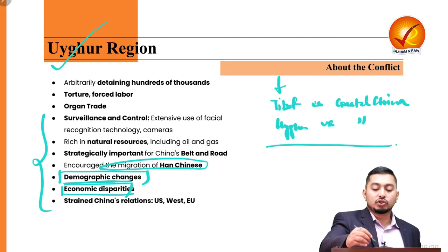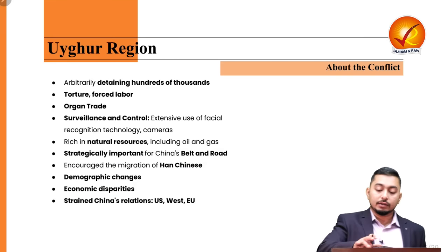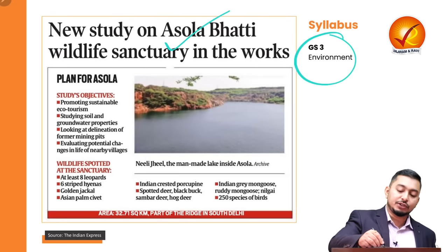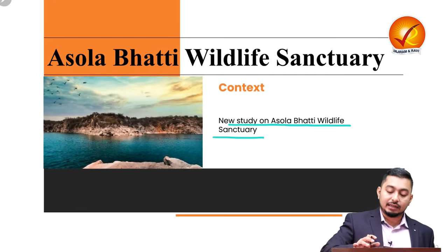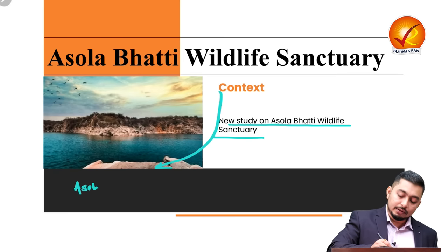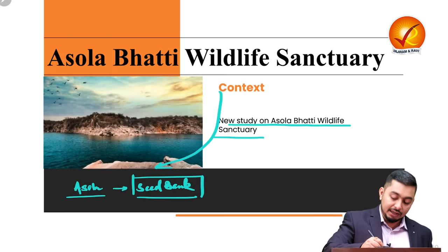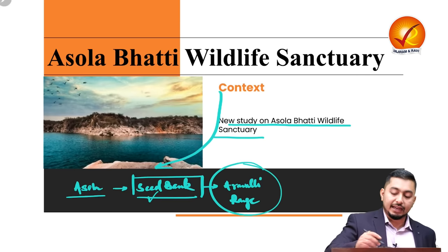The last article pertains to the Asola Bhatti Wildlife Sanctuary, relating to GS3 Environment. A new study on the Asola Bhatti Wildlife Sanctuary has been conducted. Asola Bhatti is also acting as a seed bank — a seed bank has been established in this region because it is part of the Aravali range, to conserve the local ecosystem.